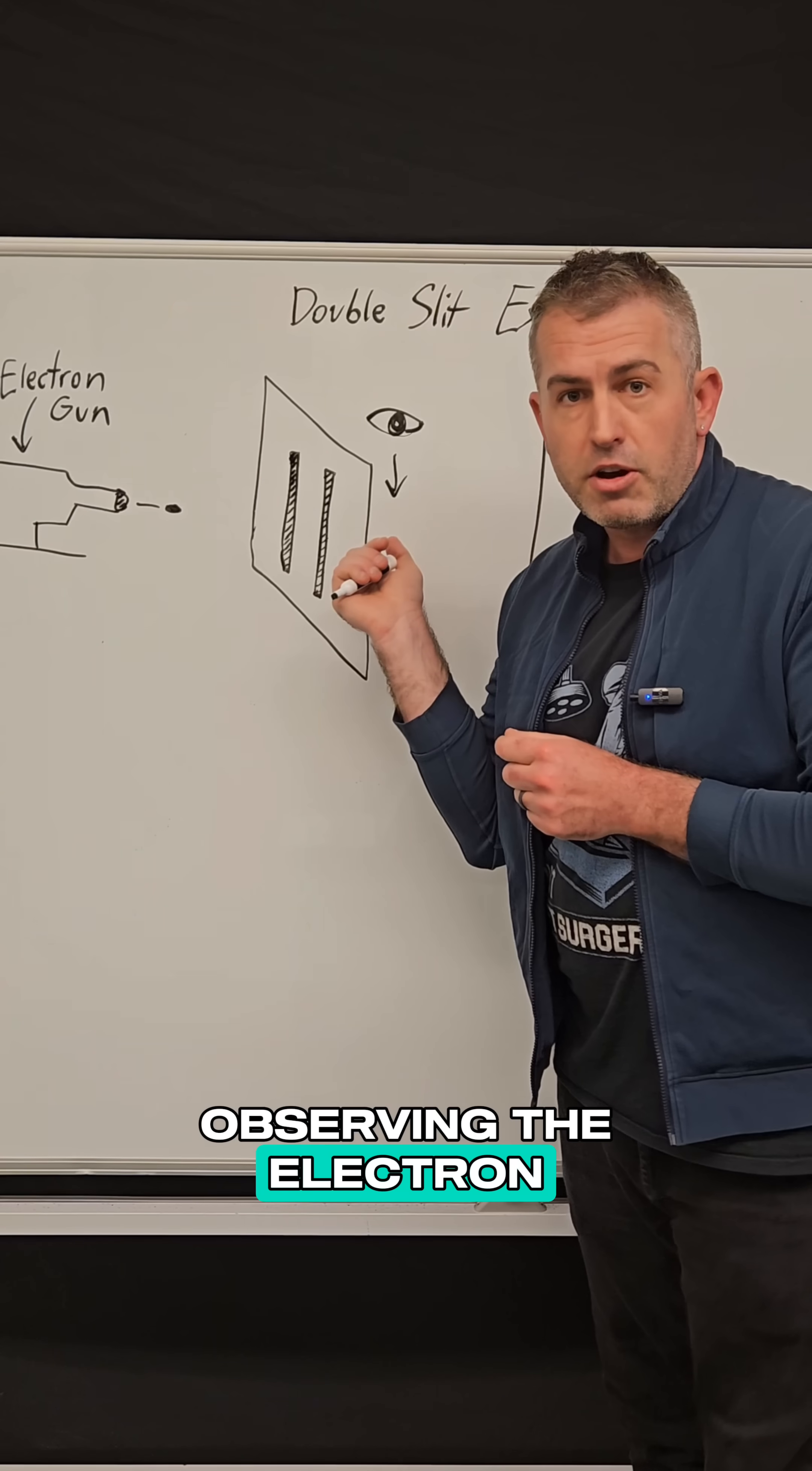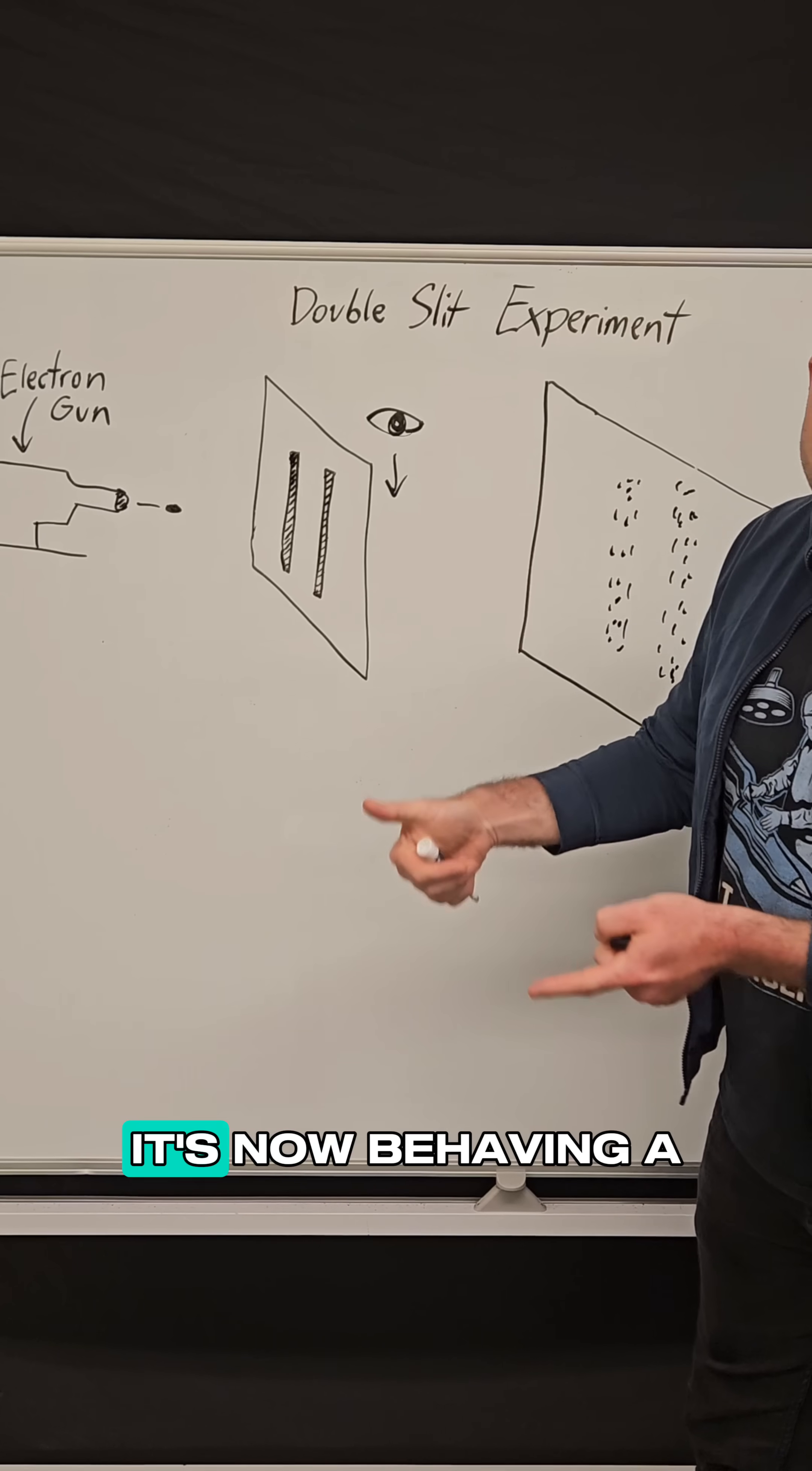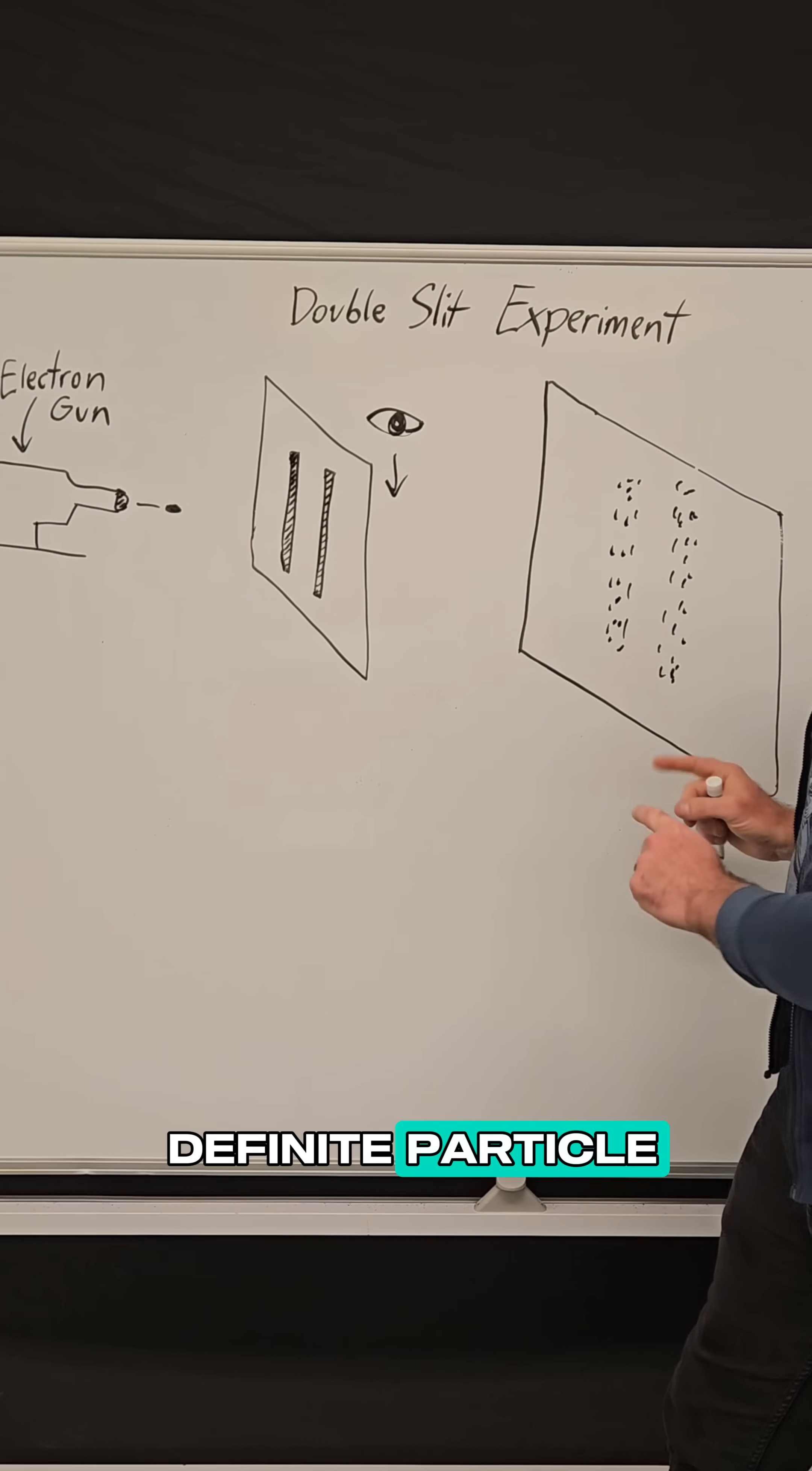So the act of observing the electron actually changed the outcome. Instead of behaving one way, it's now behaving a different way, not like a wave anymore, but like a definite particle.